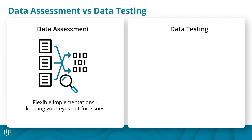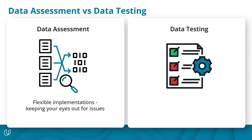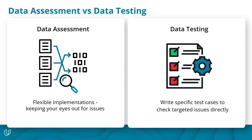During the data testing stage, which is data assessment after cleaning, you already know the exact issues you're targeting with the data cleaning, so you can define very specific test cases. For example, you test directly that the number of hashtags and NAN values in your data after cleaning are zero. It's helpful to start thinking about and even writing some basic testing code during data assessment so that you can get a head start on it.